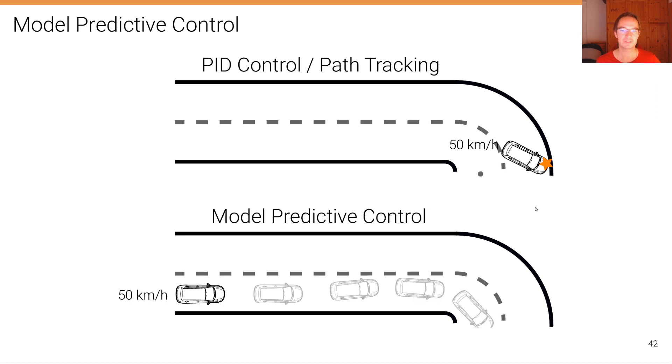In contrast, a model predictive controller unrolls the model for T time steps, as long as we tell it to unroll the model.